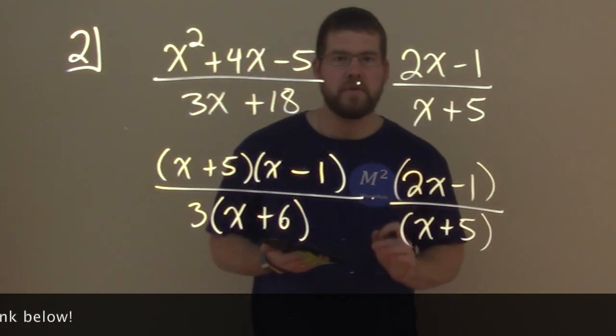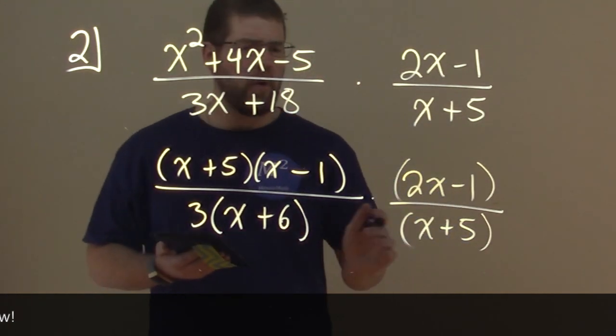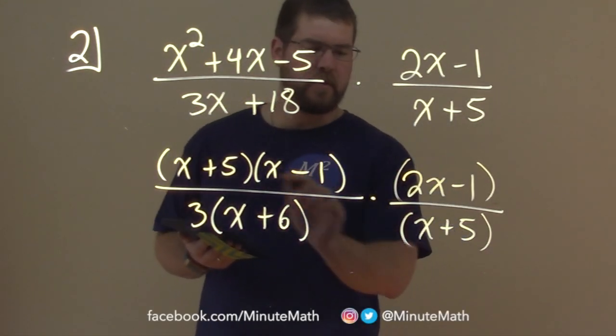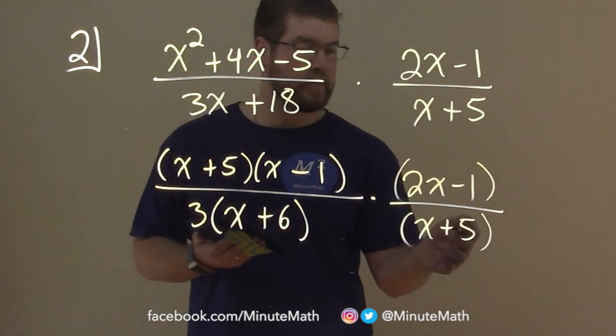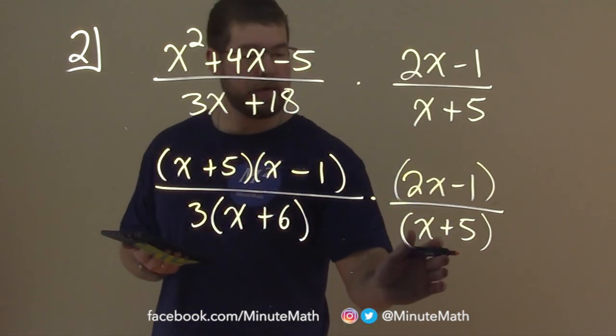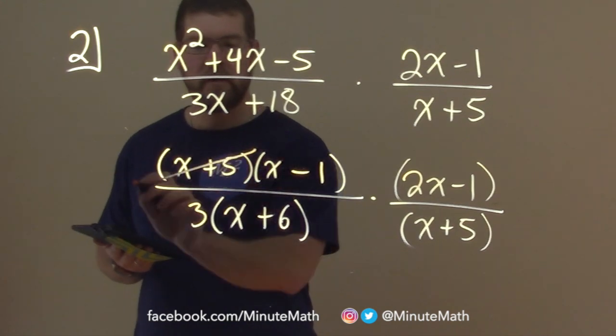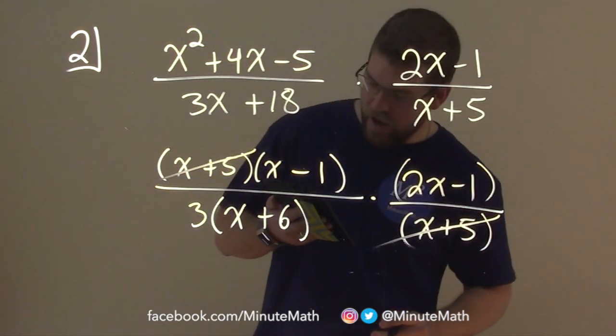Alright, so now what can we do? Well, we see this multiplication is going on. If we can cross simplify anything or cross out anything that's similar, we see the x plus 5 in the denominator and x plus 5 in the numerator. They cancel each other out here.